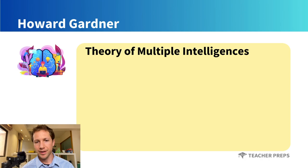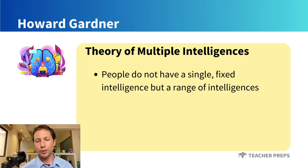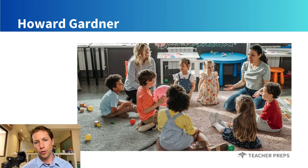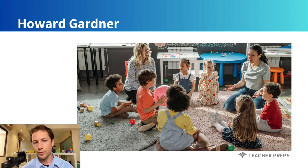Howard Gardner and his theory of multiple intelligences proposes that people do not have a single fixed intelligence but a range of intelligences, including linguistic, logical, musical, kinesthetic, spatial, interpersonal, intrapersonal, and naturalistic. For our exam, remember that this theory suggests educators should provide diverse learning environments that offer various ways for students to learn and express their understanding.